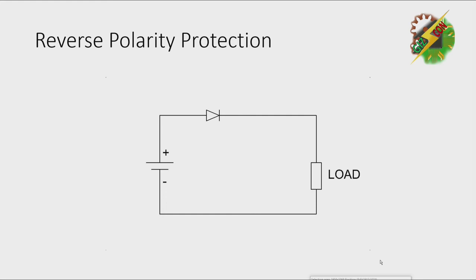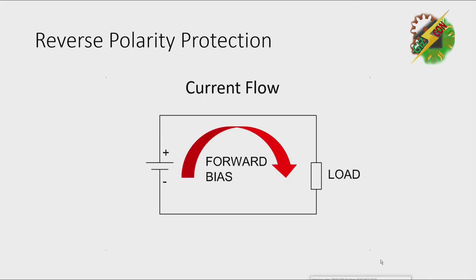Here in this circuit, we install the diode here to protect the load. For forward bias, the current is allowed to flow.